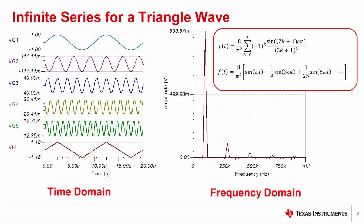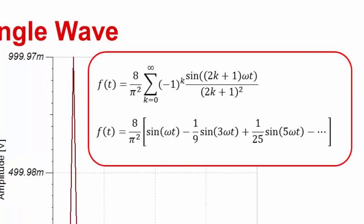Any arbitrary waveform can be decomposed into an infinite series of sinusoidal waveforms. This infinite series is called a Fourier series. An example of a Fourier series for a triangle waveform is shown here. The mathematical function shows that the series starts with sin(ωt) and continues with 1/9 sin(3ωt), 1/25 sin(5ωt), and so on.